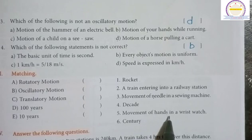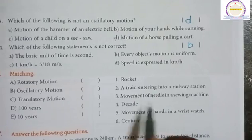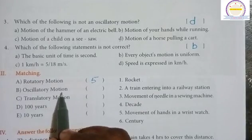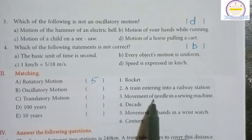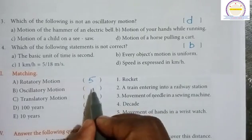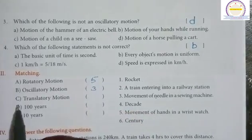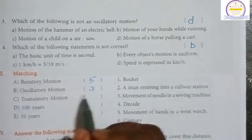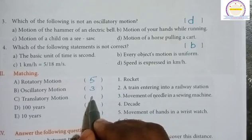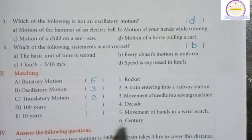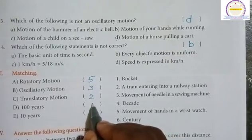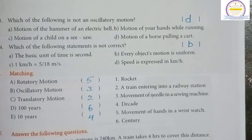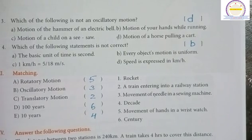Rotatory motion means movement of hands in a wristwatch, so 5. Oscillatory motion means movement of a needle in a sewing machine, so 3. Translatory motion means a train entering into a rail station, so 2. 100 years means century. 10 years means a decade. Now we are going to answer the following questions.